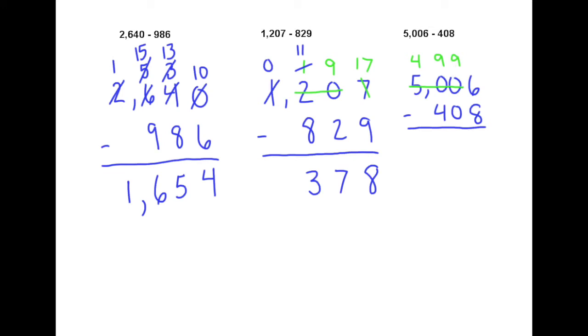Then I'm able to turn my 6 into a 16. So I've got 16 minus 8 is 8, 9 minus 0 is 9, 9 minus 4 is 5, and 4 minus 0 is 4, so we get 4598.